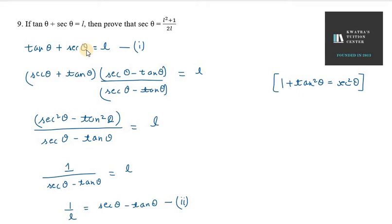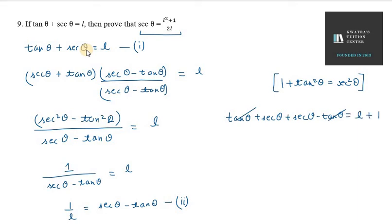From the second equation, we add: tan theta plus sec theta plus sec theta minus tan theta. The tan theta terms cancel, and we get L plus 1 over L.